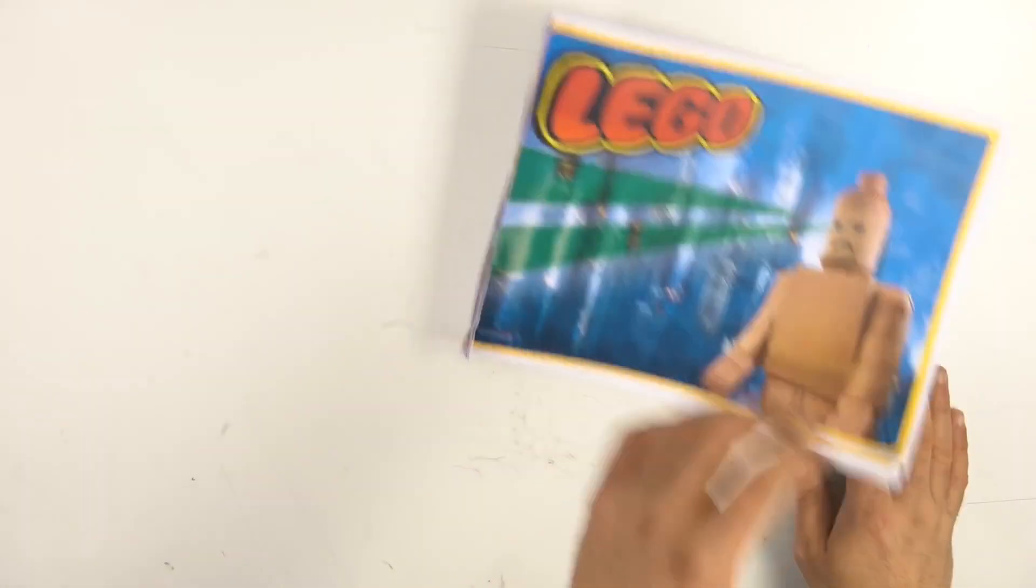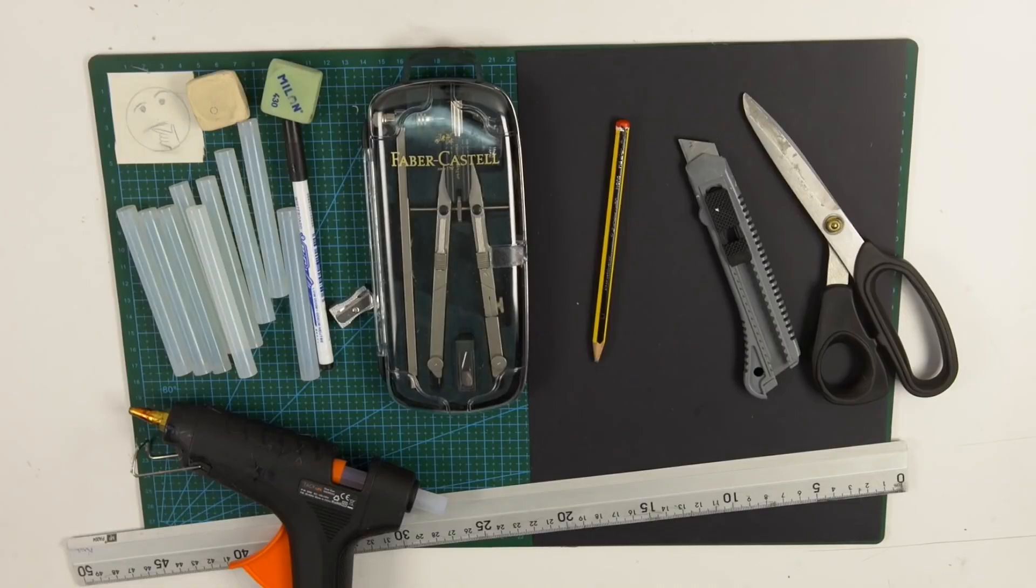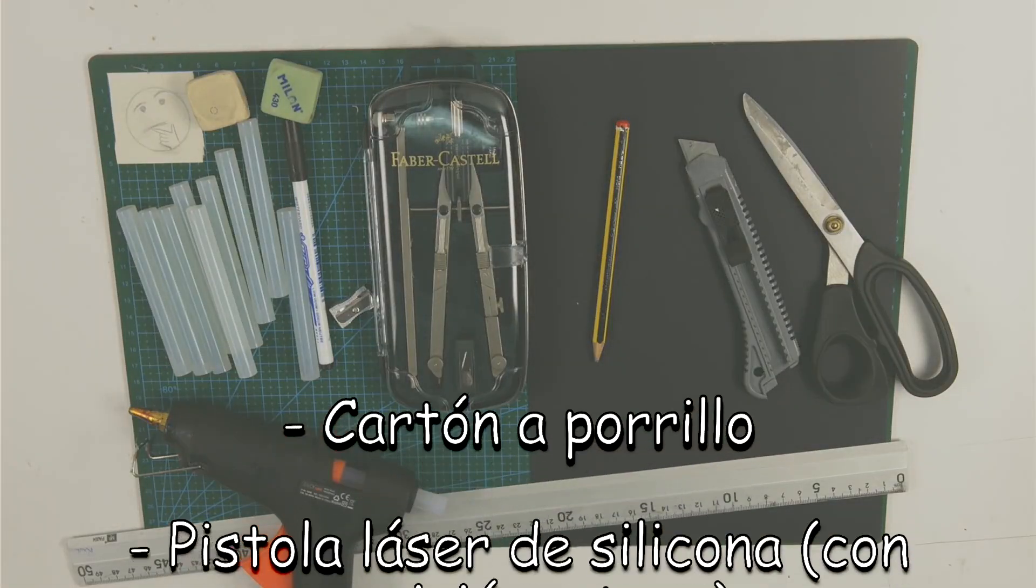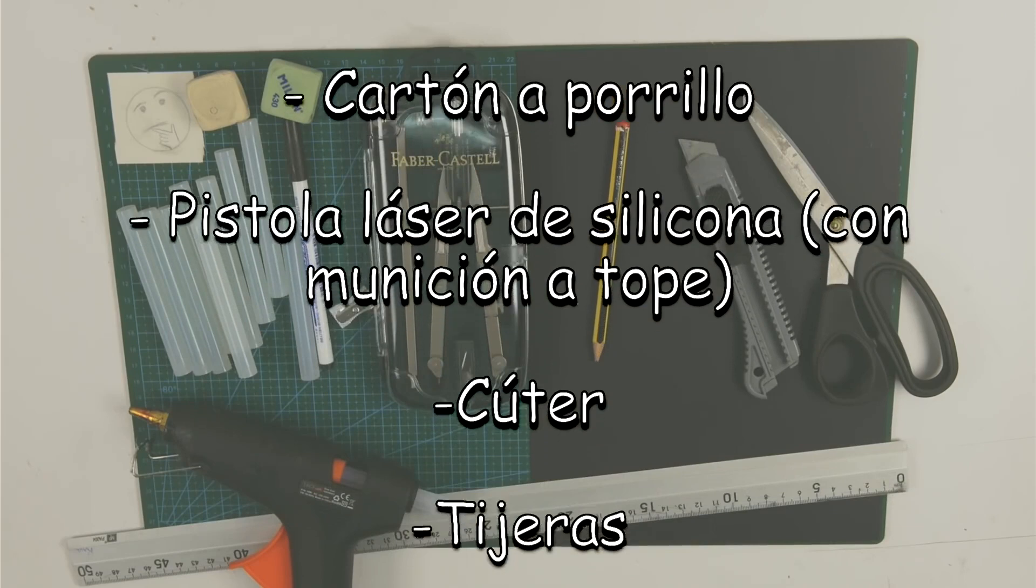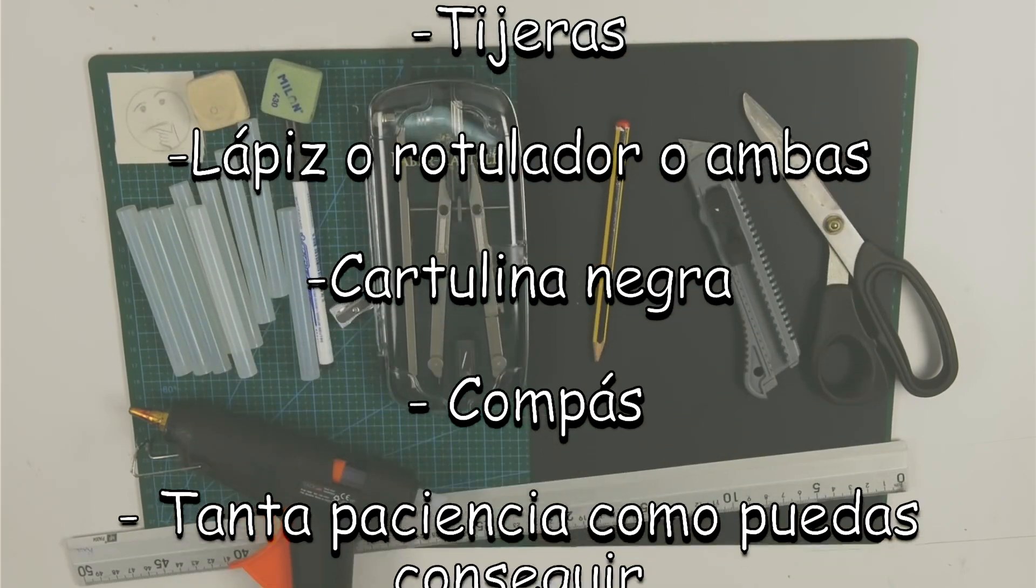These are the materials you need to build this costume: cardboard, hot glue gun with lots of glue sticks, a craft knife, scissors, pencils or sharpie, lab grade reward, compass, and lots of patience to continue.